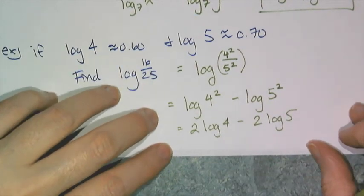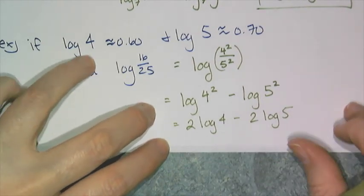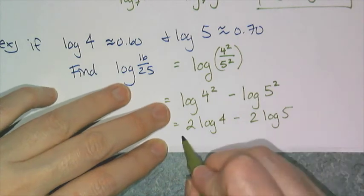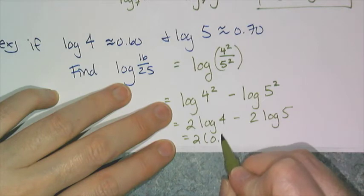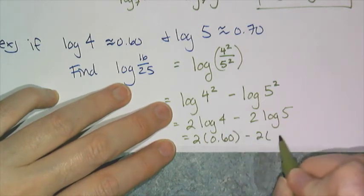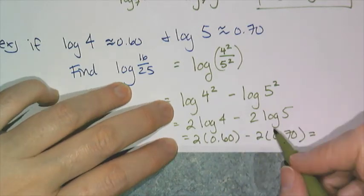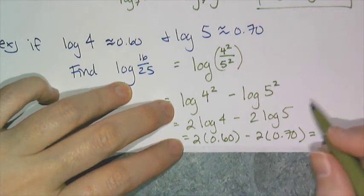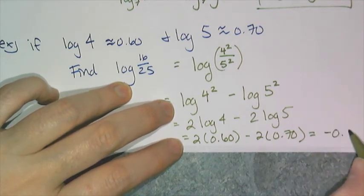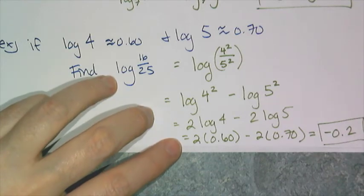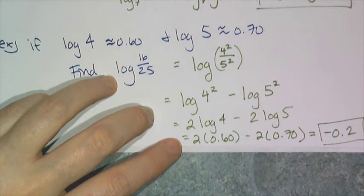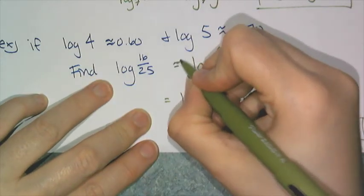Now I have decimal approximations of log 4 and log 5 so I can substitute those in. So it's 2 times 0.60 minus 2 times 0.70. And if I just simplify, I get negative 0.2. So that's what the log of 16 over 25 is approximately equal to. And actually, I should make these approximates.